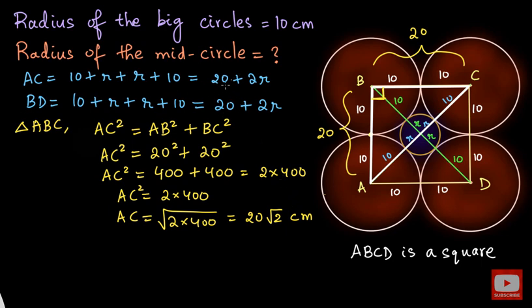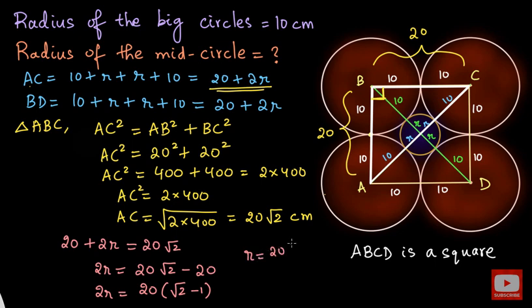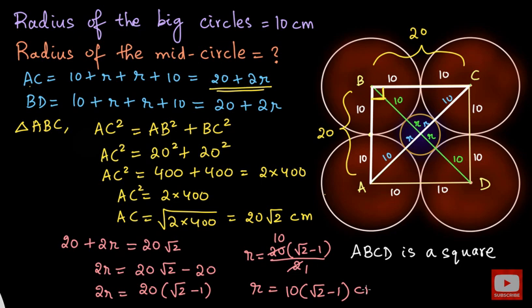But earlier we also calculated the length of AC in terms of R as 20 plus 2R. Equating both expressions: 20 plus 2R equals 20 root 2. Taking 20 to the other side: 2R equals 20 root 2 minus 20. Taking 20 as a common factor: 2R equals 20 times (root 2 minus 1). Dividing both sides by 2, we cancel 2 into 20 to get 10. So the radius of the small circle is 10 times (root 2 minus 1) centimeters.